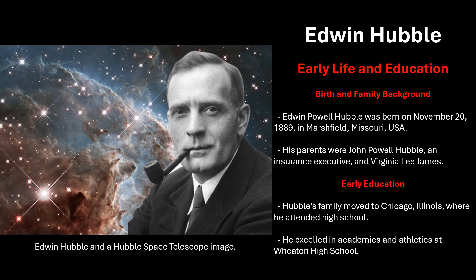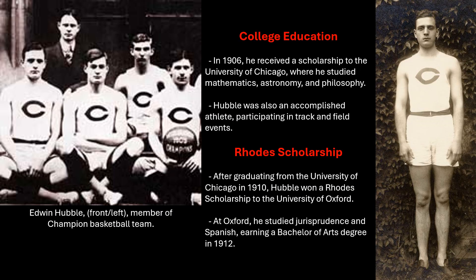Hubble's family moved to Chicago, Illinois, where he attended Wheaton High School, where he excelled in academics and athletics. In 1906, he received a scholarship to the University of Chicago, where he studied mathematics, astronomy, and philosophy. He was also an accomplished athlete, participating in track and field events. After graduating from the University of Chicago in 1910, Hubble won a Rhodes Scholarship to the University of Oxford in the UK.